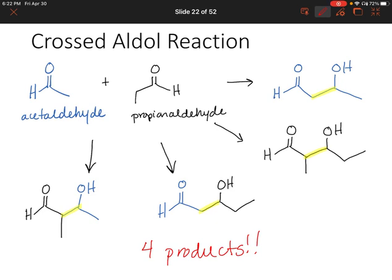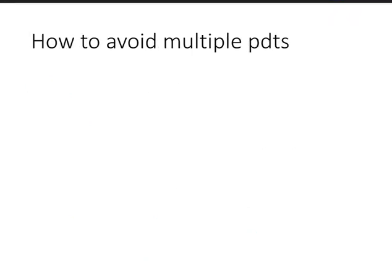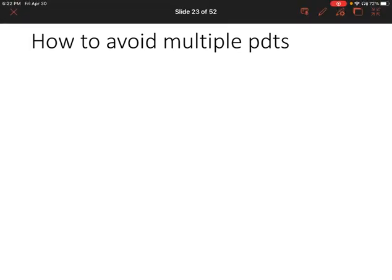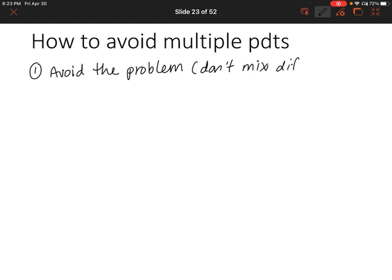So how could we limit the products that we form? Let's talk about how to avoid multiple products for this type of reaction. The first option is obvious — just avoid the problem. Don't mix different aldehydes; maybe you could find a different synthesis pathway to make your product. Another option is to drip the aldehyde or ketone into a really strong base, and that's going to create a hundred percent of your enolate. Then you could transfer that solution to your second aldehyde or ketone and control the reaction that way.